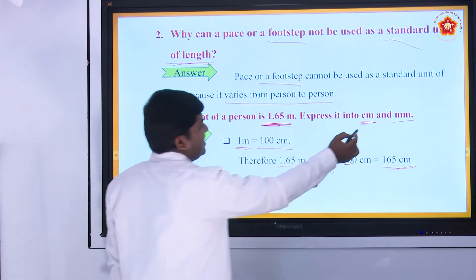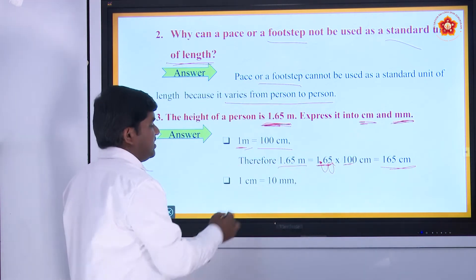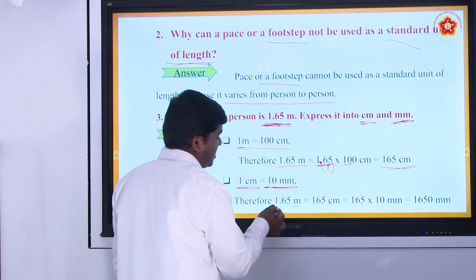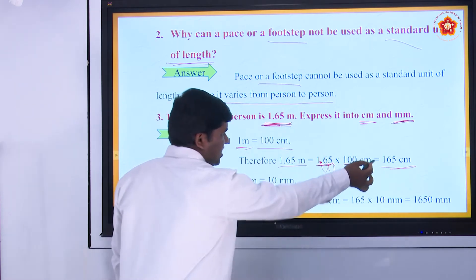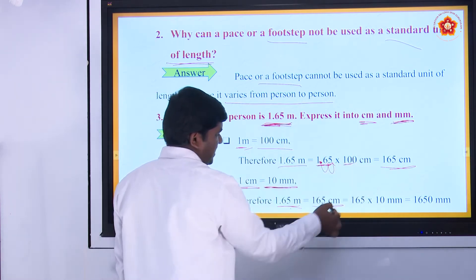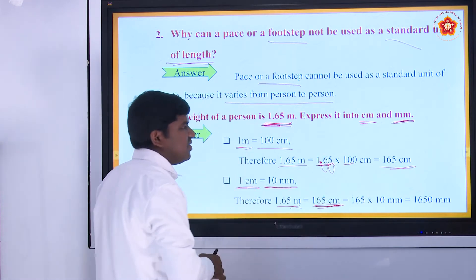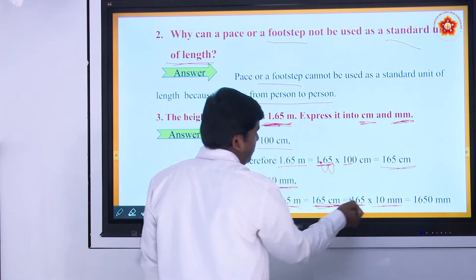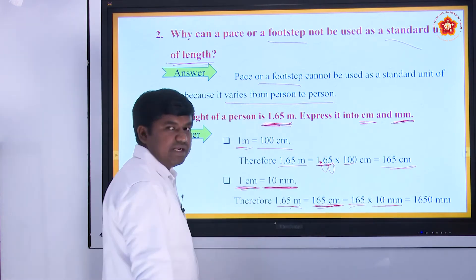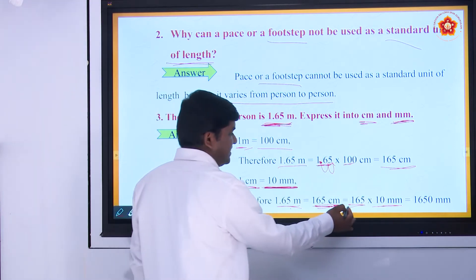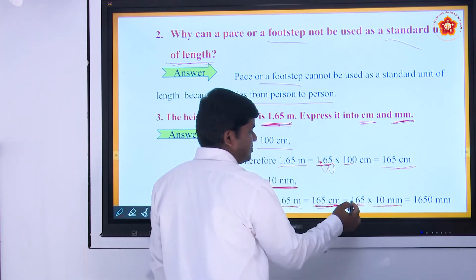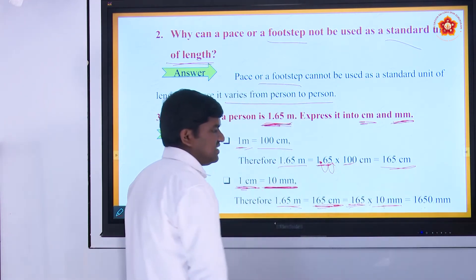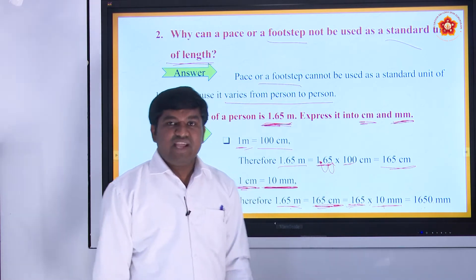Then they are asking again in millimeter. 1 centimeter is equal to 10 millimeter. Therefore, 165 centimeter converted to millimeter: 165 into 10 millimeter. Why? Because 1 centimeter is equal to 10 millimeter. So 165 into 10 equals 1650 millimeter.